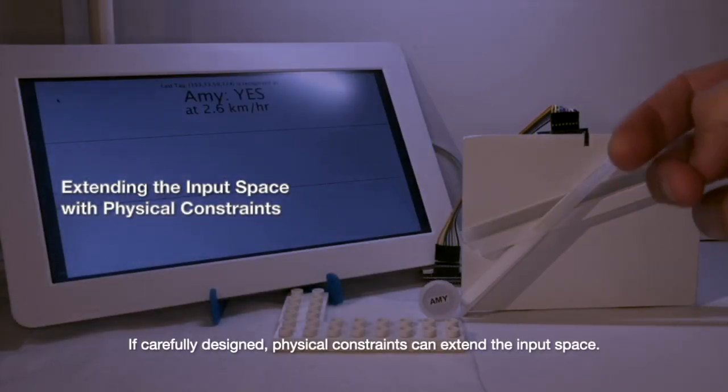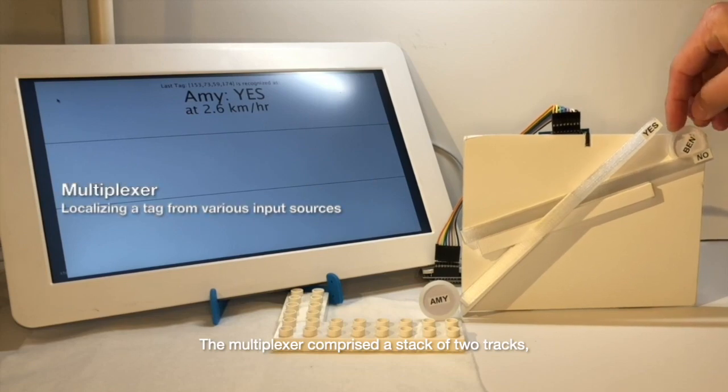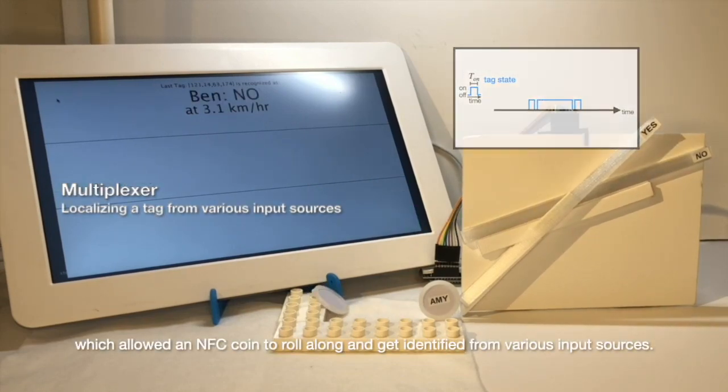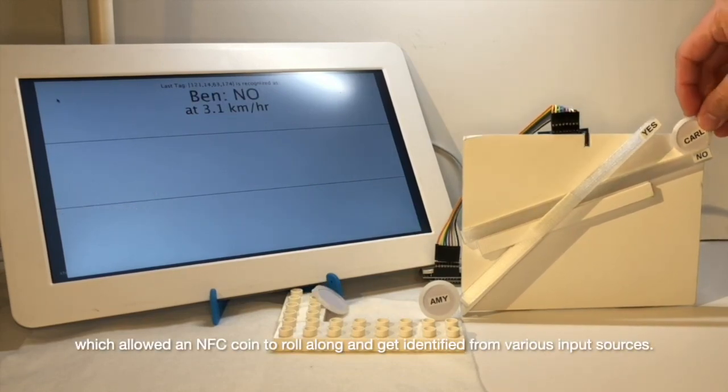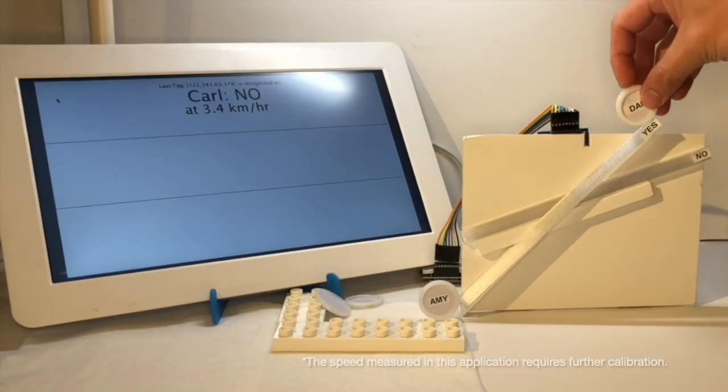If carefully designed, physical constraints can extend the input space. The multiplexer comprises a stack of two tracks which allows an NFC coin to roll along and get identified from various input sources.